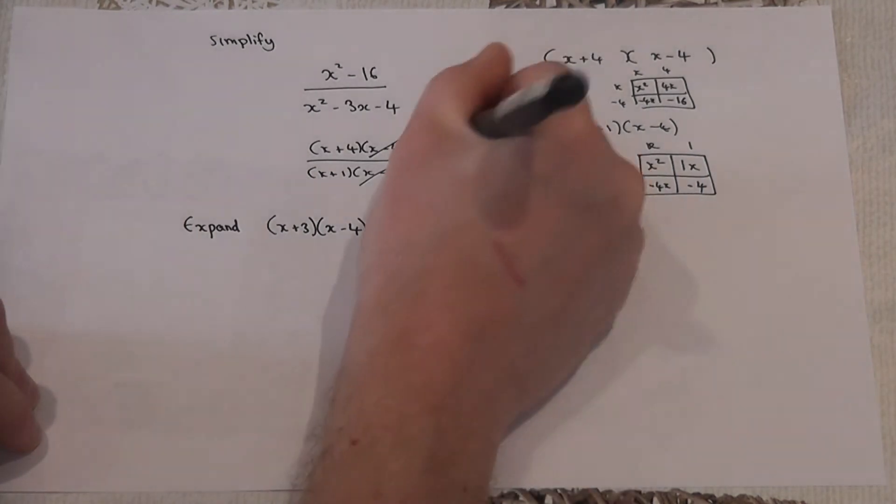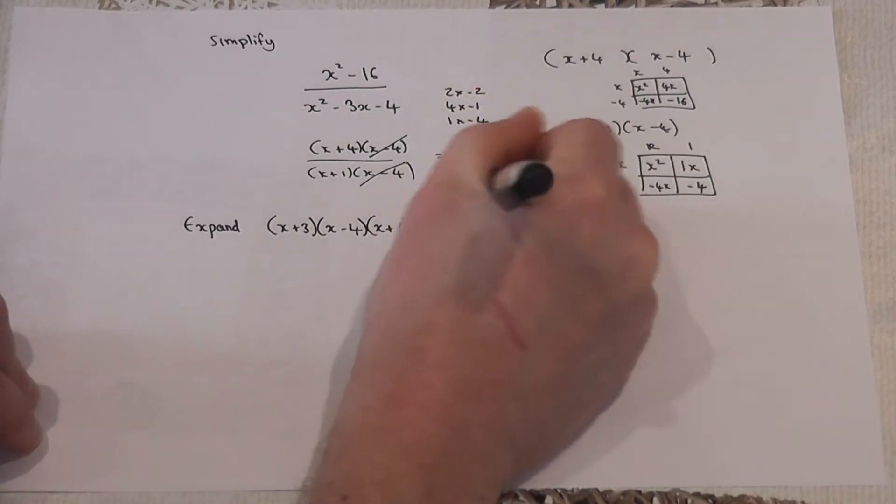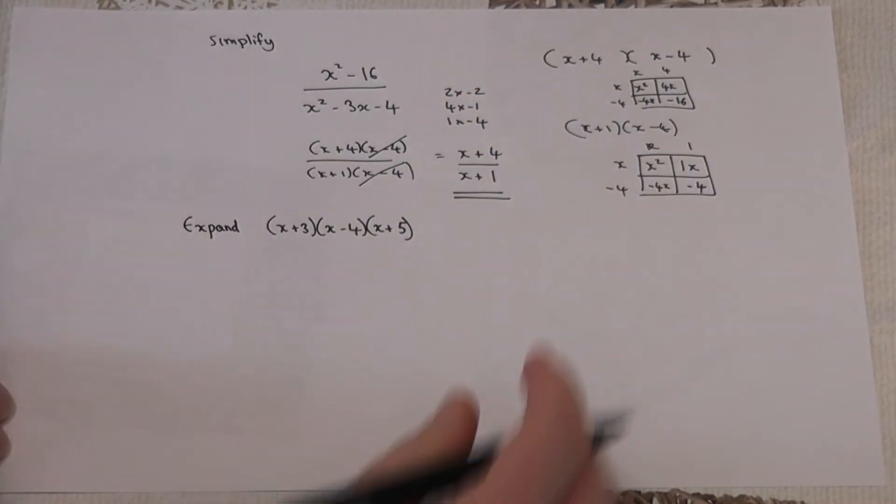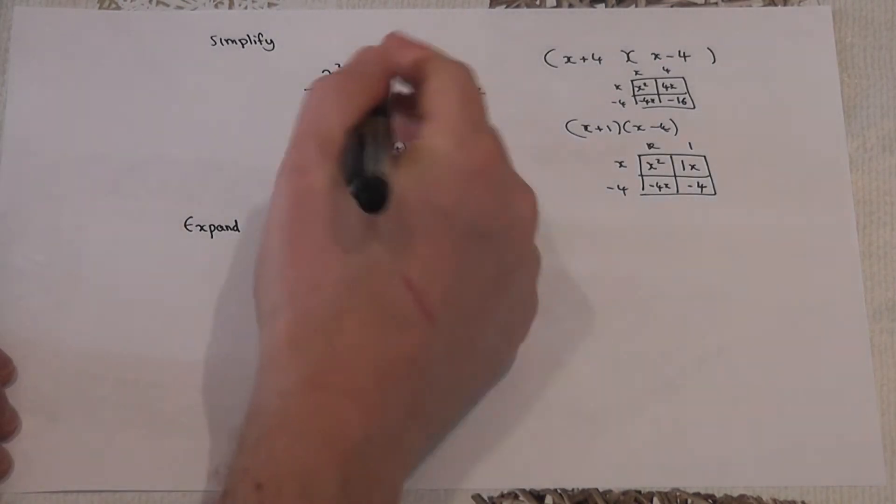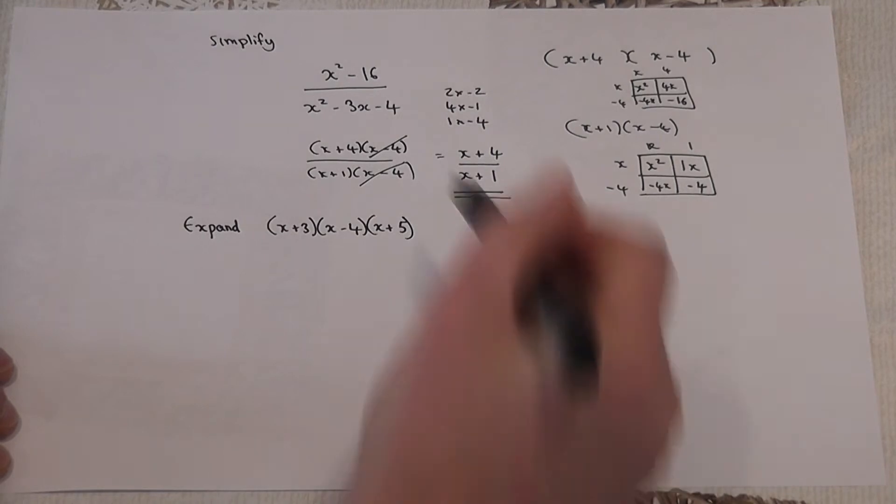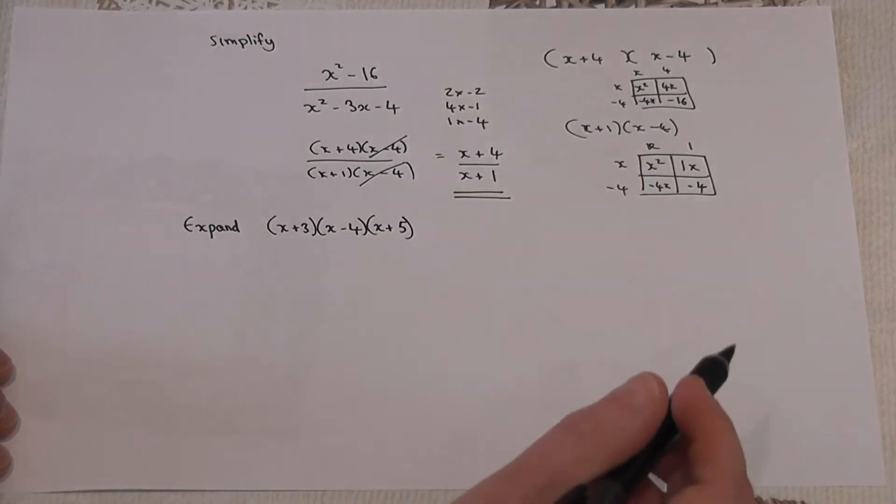And we're left with x plus 4 on the top and x plus 1 on the bottom, and this is the fraction simplified. So again, we factorize the top and the bottom, we cancel, and then write down a simplified answer.